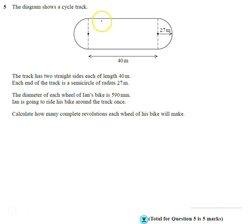Okay, so we want to find out how many times Ian's bike wheel is going to go round. So first of all, the first thing to spot is that this curvy bit and this curvy bit, if we put those together we've got a complete circle, not a very good circle I know it should be, with a radius of 27 metres.